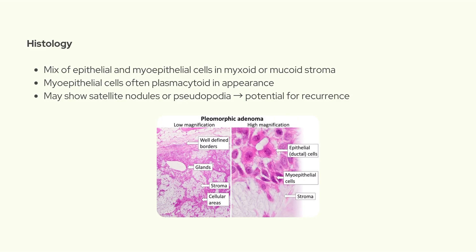Histologically, pleomorphic adenoma is usually well encapsulated and shows a combination of epithelial and myoepithelial components embedded in a mucoid or myxoid stroma. The myoepithelial cells often have a plasmacytoid appearance — round with eccentric nuclei and eosinophilic cytoplasm. One really important detail is that even though the tumor is usually encapsulated, sometimes there is incomplete capsular development or microscopic extensions into surrounding tissue — like satellite nodules or pseudopodia — which can increase the risk of recurrence if not completely excised.